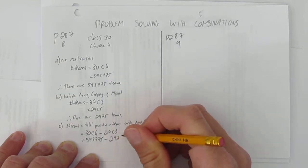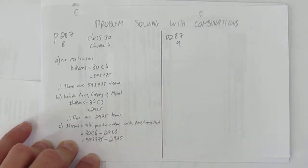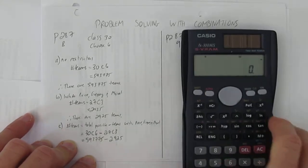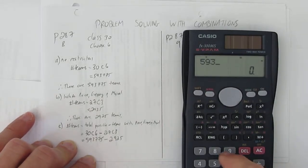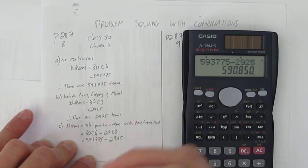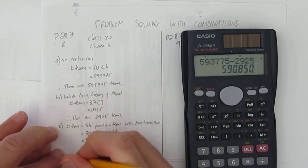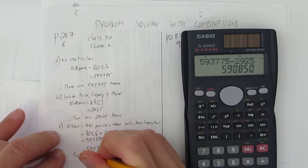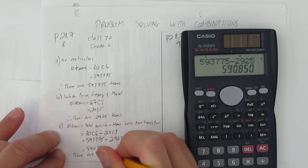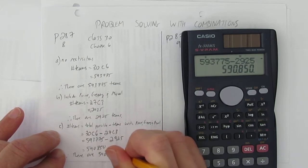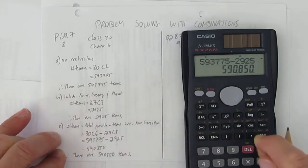So I just go 593,775 minus 2,925 and I get 590,850. So in this case, there are 590,850 possible teams. That's question eight done.